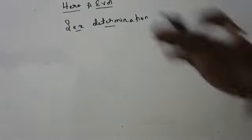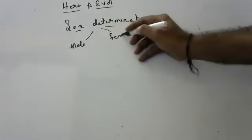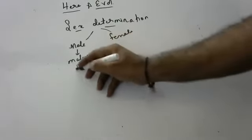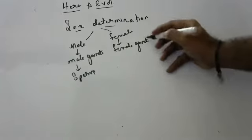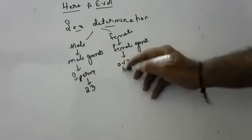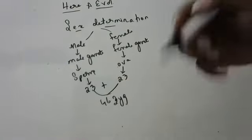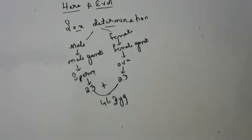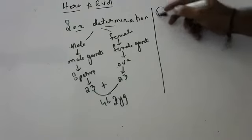In males, gametes are sperms, and in females, gametes are ova. Sperm will have 23 chromosomes and ova will have 23 chromosomes, so 23 plus 23 equals 46 chromosomes in the zygote, which becomes the future fetus.